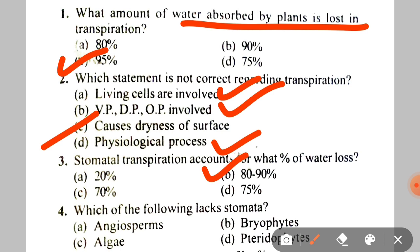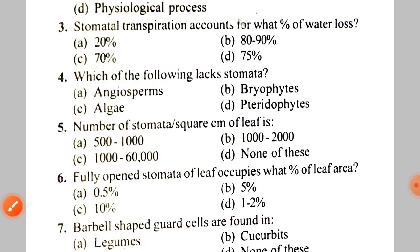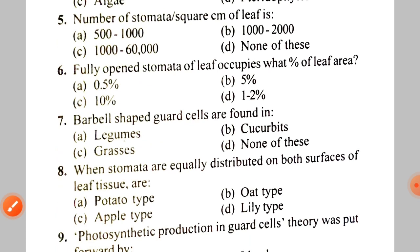Next: which of the following lacks stomata? A. Angiosperms, B. Bryophytes, C. Algae, D. Pteridophytes. The correct answer is C — Algae, because algae do not have stomata.